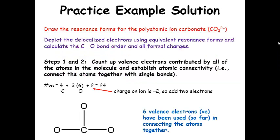Let's go through this step by step. For steps one and two, using our Lewis structure drawing steps, we count up all the valence electrons contributed by all the atoms and establish atomic connectivity — how the atoms hook together. Carbon contributes four, each oxygen contributes six. Don't forget, we have a negative two charge on the ion, so we add two more electrons, giving us 24 electrons total. Once we connect everything together, we use two, four, six electrons in the connectivity — so we've used six valence electrons so far.